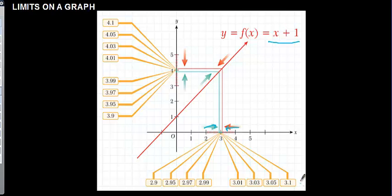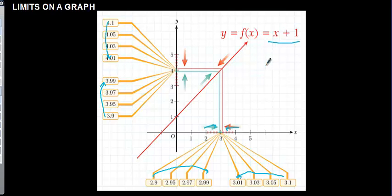These values are getting closer to 3. From 3.1 it starts and it's getting closer to 3. And from 3.9 it starts and getting closer to 3. When the x values are getting closer to 3, the limit value is getting closer to 4. So the y value is also: y is equal to limit of x tends to 3 of f(x).